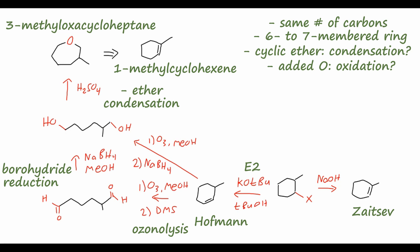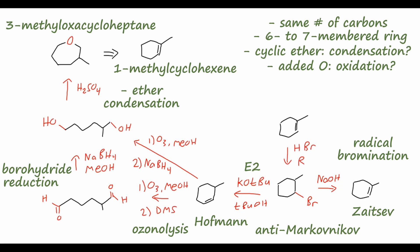Finally, how do we convert our starting material — with the double bond between those two carbons — to the compound with a leaving group? A good leaving group is a halogen like bromine, so we imagine a secondary alkyl bromide where X equals Br. We know a few methods to halogenate alkenes, but here we've added bromine to the less substituted carbon — anti-Markovnikov addition. The reaction for anti-Markovnikov bromination of an alkene is radical bromination using hydrobromic acid and a peroxide (ROOR), which proceeds through a radical mechanism to give the anti-Markovnikov product.